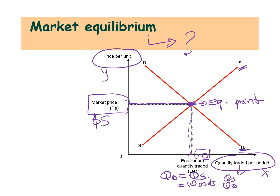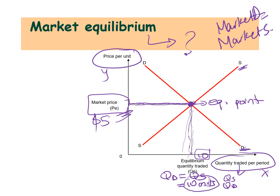It has a market price of five dollars. In other words, a market is in equilibrium where market demand equals market supply. At the equilibrium market price, the quantity consumers wish to buy is exactly equal to the quantity producers wish to sell — which is in our example 10 units. If a market is in equilibrium, there are no pressures to change the market price.